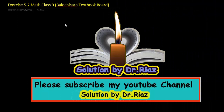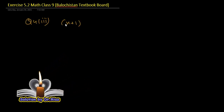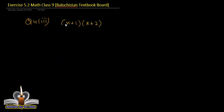Solve kertai hain, question number 4, third part, which is (x+1)(x+2)(x+3)(x+4) minus 24.